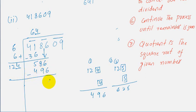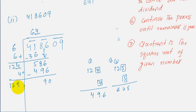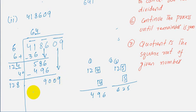We subtract: 586 minus 496 equals 90. Now we add 4 to our divisor 124 to get 128. Since 128 is greater than 90, we take our last pair down, which is 09, making the new dividend 9009.